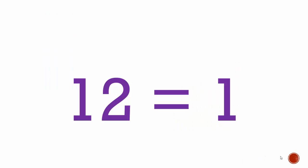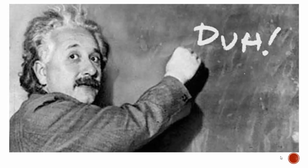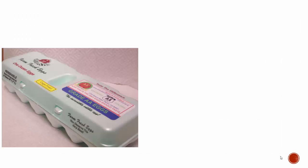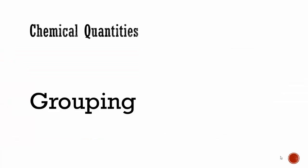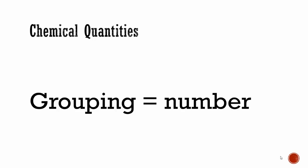How can 12 equal one? Everybody knows that one dozen equals 12. The dozen is what I call a grouping — a name for a number. Groupings equal a number.